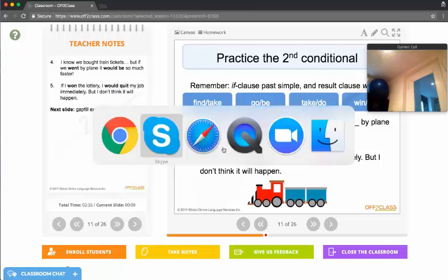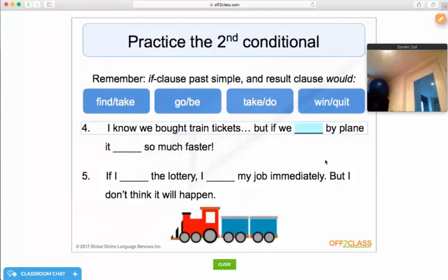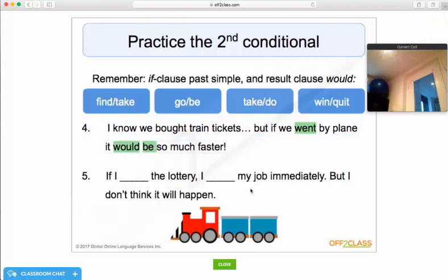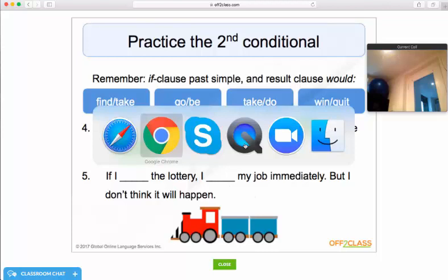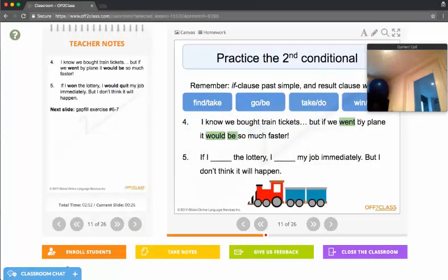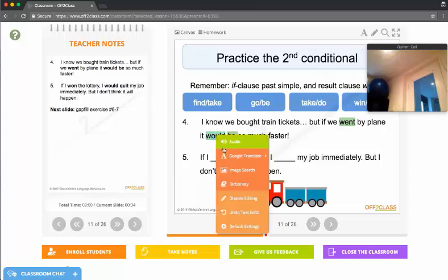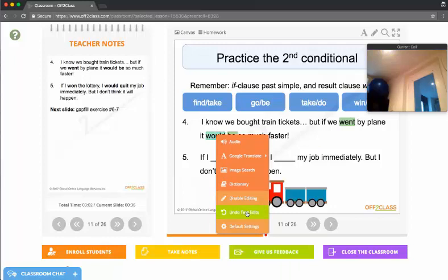And when I come back to Jose's side of Off2Class, if we went by plane it would be so much faster. So Jose can type into any of the content and when I come back to the teacher's side I can see how Jose has edited the content. Now I can right click on any of these edits and undo the text edit. So that is, take the content back to its default state.